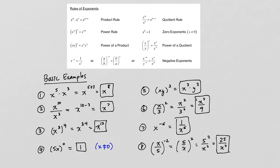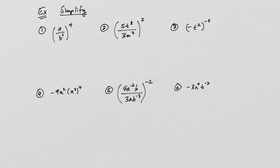So those are all basic examples of the rules of exponents. In our next, more complicated example set, the directions are to simplify. In problem one, we have (a over b cubed) quantity to the fourth power. First we have a quotient to a power, so we raise the top to that power and the bottom — b cubed — also gets raised to the fourth power. Now we have a power to a power, so we multiply those powers. Our final answer is a to the fourth over b to the twelfth. Note that you cannot subtract these powers because the bases are not the same.